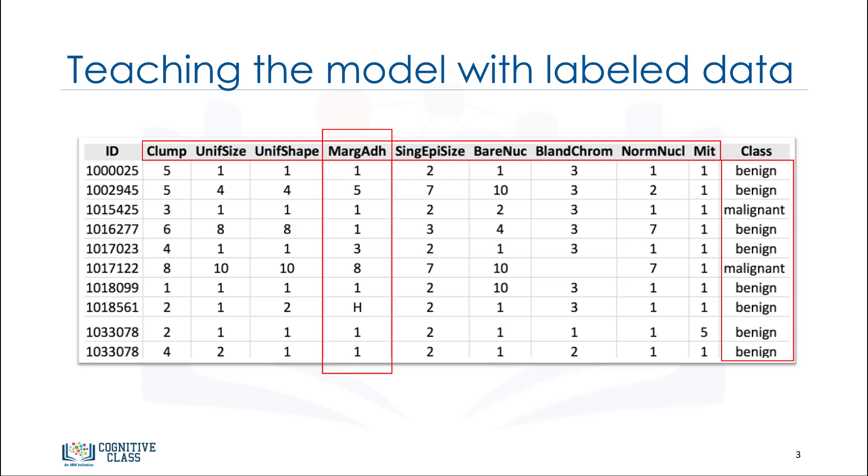The columns are called features, which include the data. If you plot this data and look at a single data point on a plot, it'll have all of these attributes. That would make a row on this chart, also referred to as an observation.